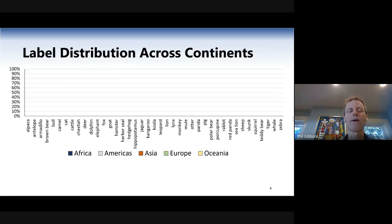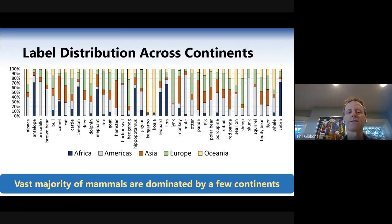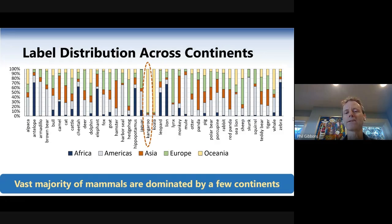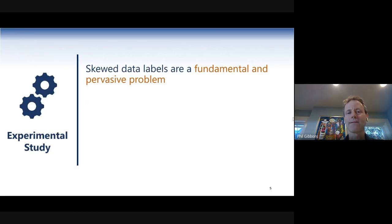Our results show that there is indeed a high skew in labels across geographic regions. This graph, broken down by continent, shows the 42 different mammals — the vast majority are dominated by just a few continents. For instance, kangaroos: not surprisingly, the fraction of images from Oceania dominates all other continents. Skunks are dominant in America and a little bit in Europe. So if you look at this dataset, you have a good example of skewed distribution in the real world. In general, the paper studied mostly synthetically skewed datasets experimentally to see how bad the problem was. We discovered a significant drop in accuracy.